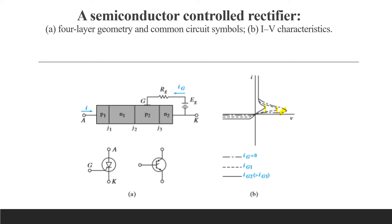When an SCR is biased in the forward blocking state, a small current supplied to the gate can initiate switching to the conducting state. As a result, the anode switching voltage decreases as the gate current IG increases. This type of turn-on control makes an SCR a useful and versatile device in switching and control circuits.